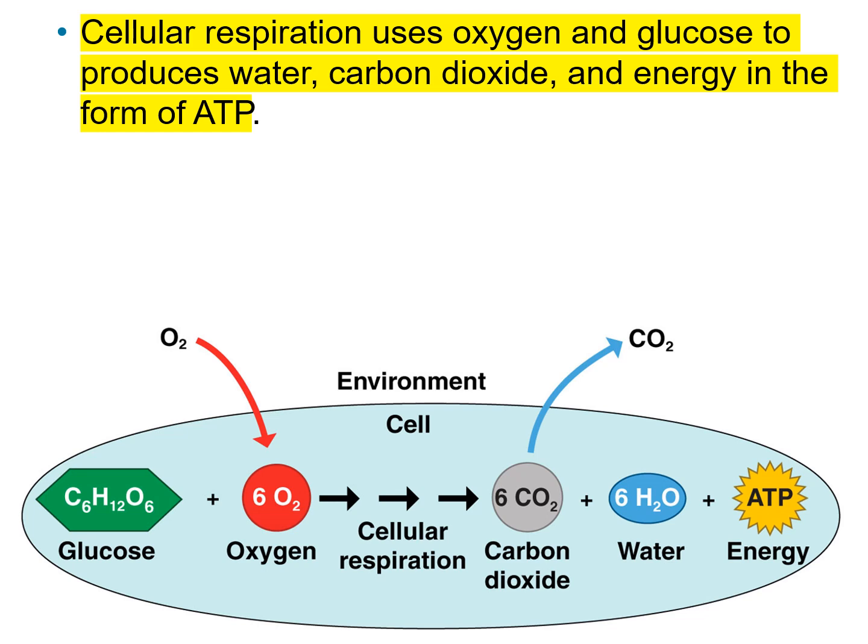Previously, we went over glycolysis, the prep step, the Krebs cycle, and the electron transport chain. I showed you how that is part of cellular respiration — how we take a glucose molecule and break it down into carbon dioxide, water, and energy. This is the standard metabolic reaction we use to acquire energy. Cellular respiration uses oxygen and glucose as reactants to produce water, carbon dioxide, and energy.